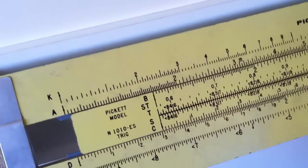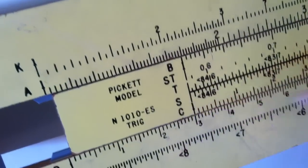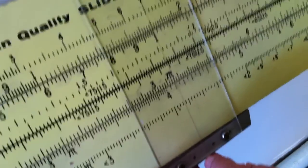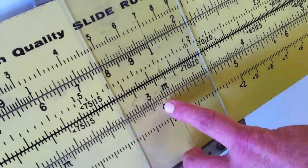And now I can even work the other way, so I can do say 1.3 times pi. 1.3 times pi is 4.